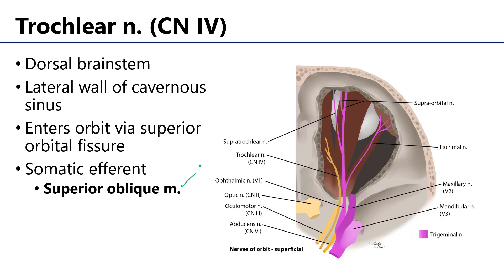Recall that the superior oblique muscle has a tendon that goes through the trochlea, which is in the trochlear fovea of the frontal bone. So the trochlear nerve serves the superior oblique muscle, which is also served by the trochlea.